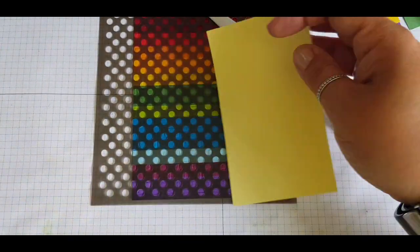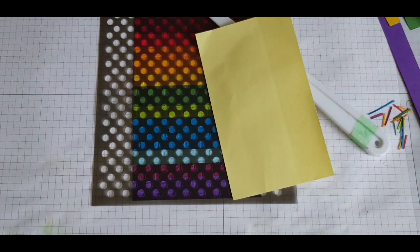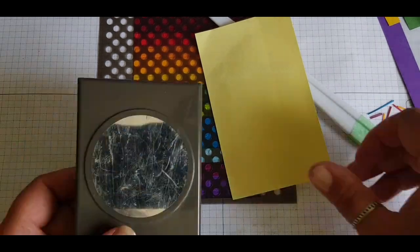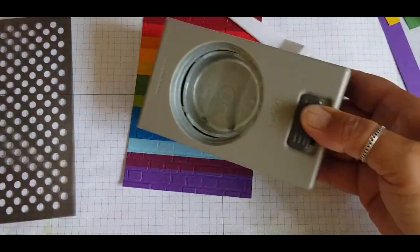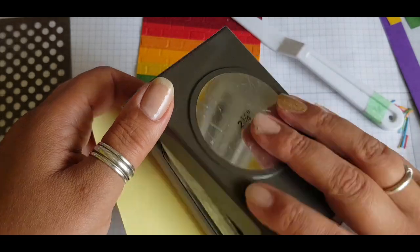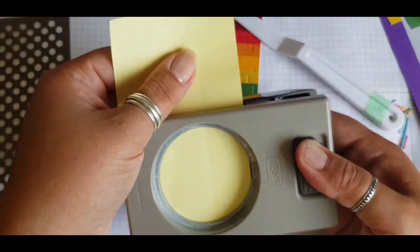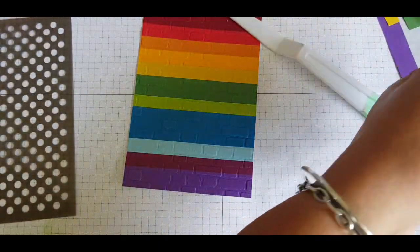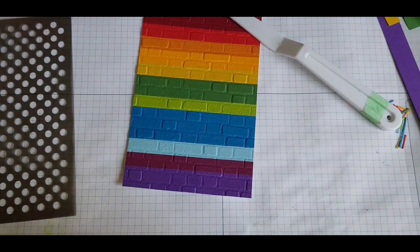I do want to use a bit of embossing paste, but before I do that I'm going to use my two and a quarter inch circle punch, cutting out a piece of post-it note to mask off an area on the card where I don't want the paste to go.